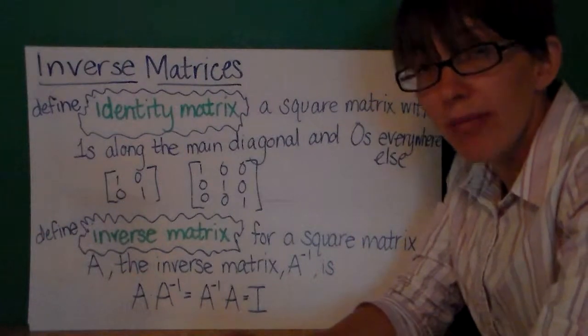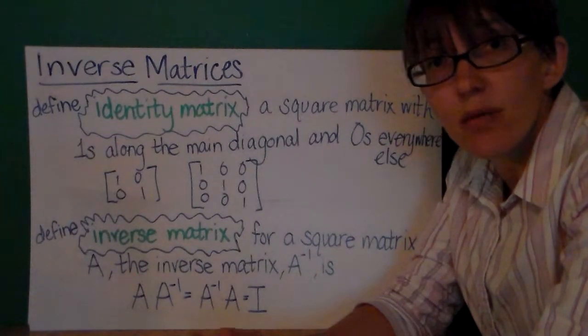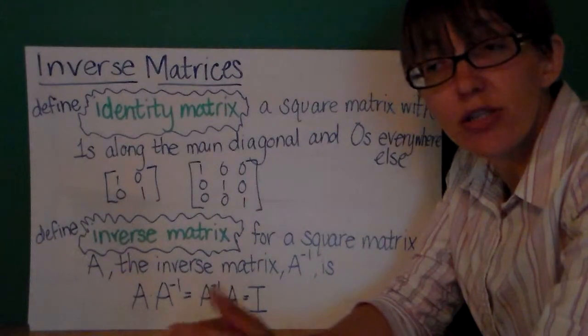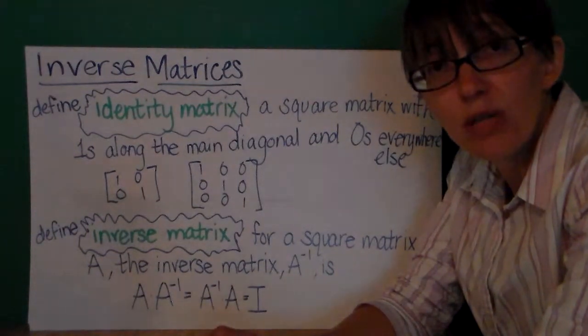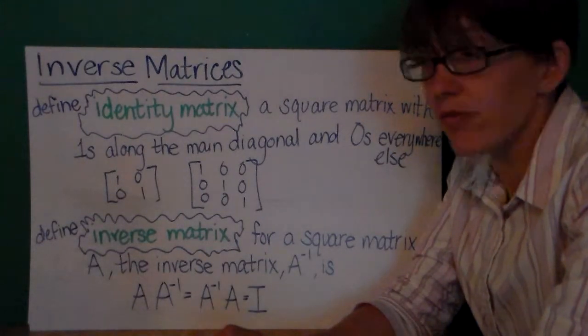Similarly, some square matrices have multiplicative inverses. When we multiply the two matrices together we get a special matrix called the identity matrix and today we're going to investigate both of those things.